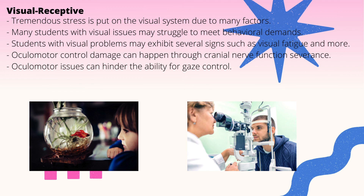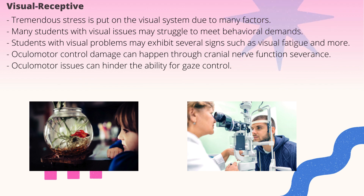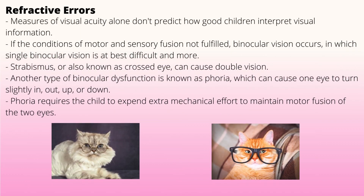Many students with visual issues may struggle to meet behavioral demands such as sitting quietly for longer periods of time. Students with visual issues may exhibit signs such as visual fatigue. Oculomotor control damage can occur through cranial nerve function severance, and the pattern of oculomotor malfunction depends on the injured brain areas and the nature of the injury. Oculomotor issues can hinder the ability for proper gaze control.